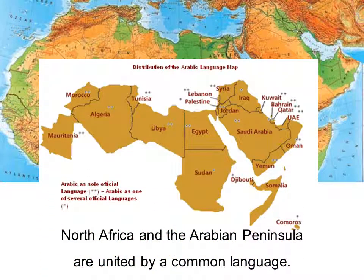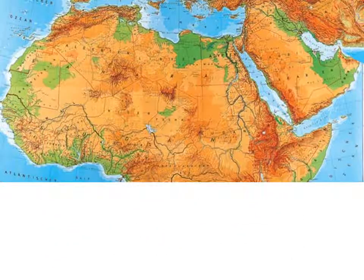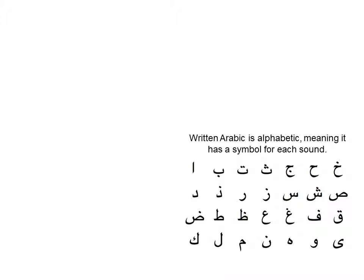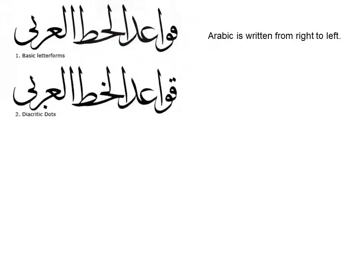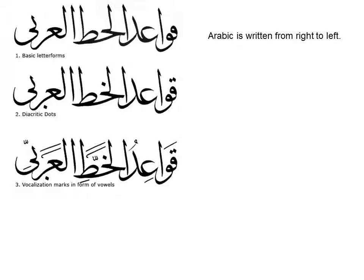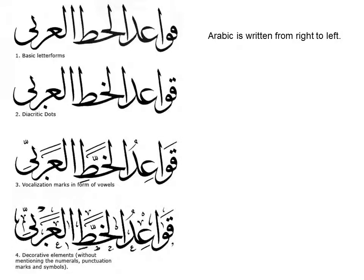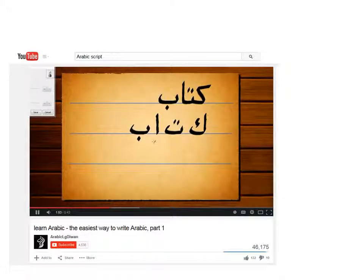North Africa and the Arabian Peninsula are united by a common language — Arabic. Arabic is alphabetic, meaning it has a symbol for each sound. Arabic is written from right to left.